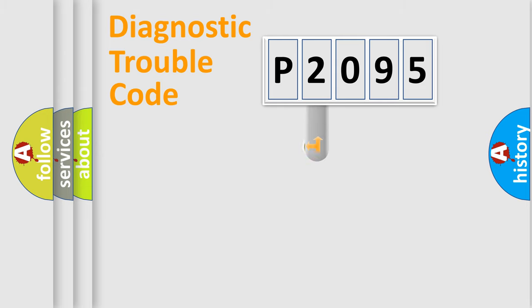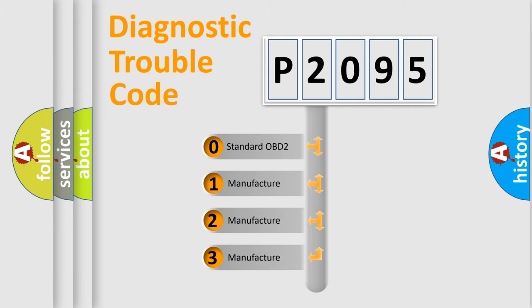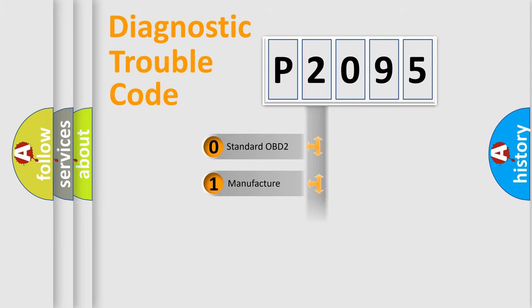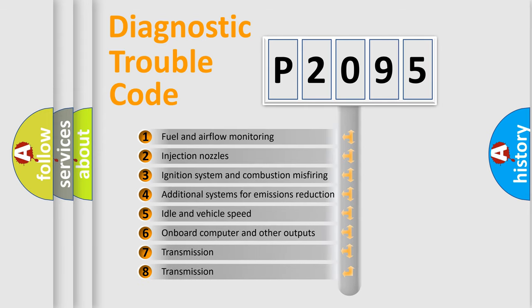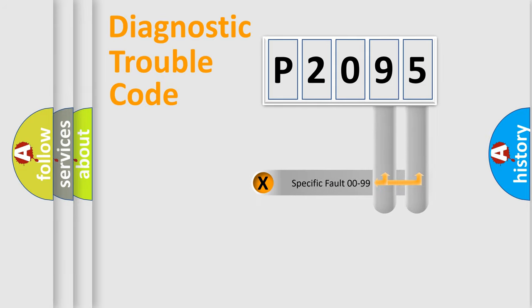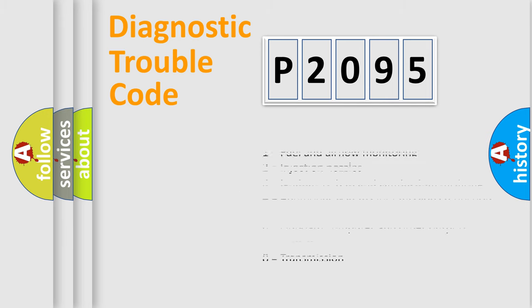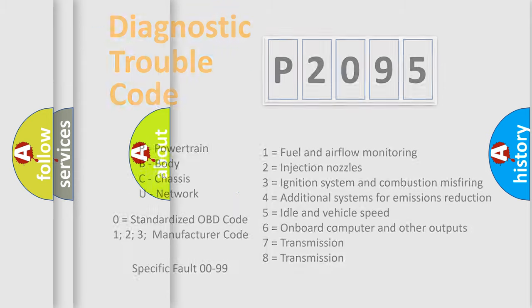This distribution is defined in the first character of the code. If the second character is expressed as zero, it is a standardized error. In the case of numbers 1, 2, or 3, it is a more specific expression of a car-specific error. The third character specifies a subset of errors. This distribution is valid only for the standardized DTC code, and only the last two characters define the specific fault of the group. Such a division is valid only if the second character code is expressed by the number zero.